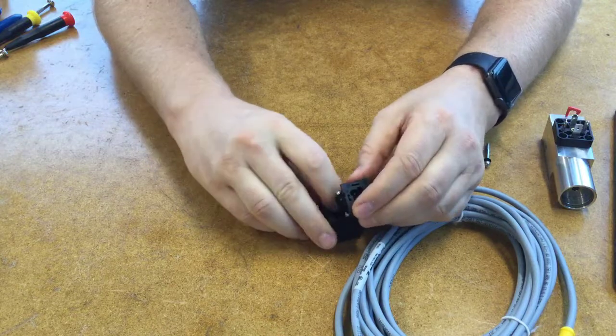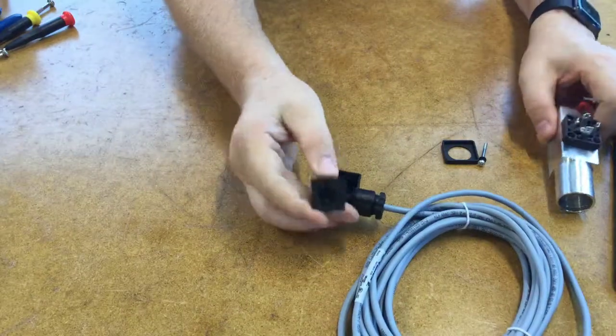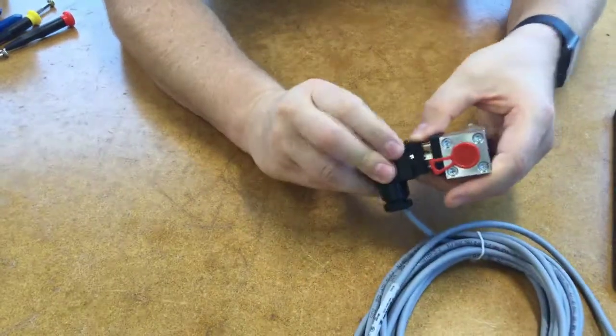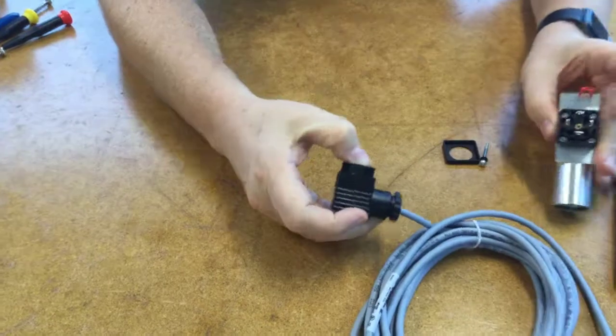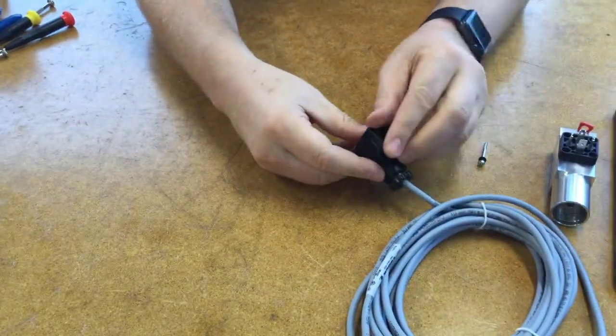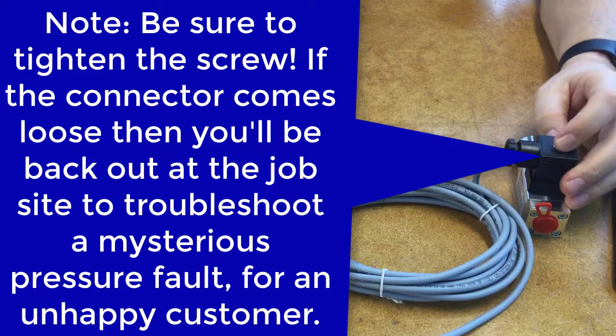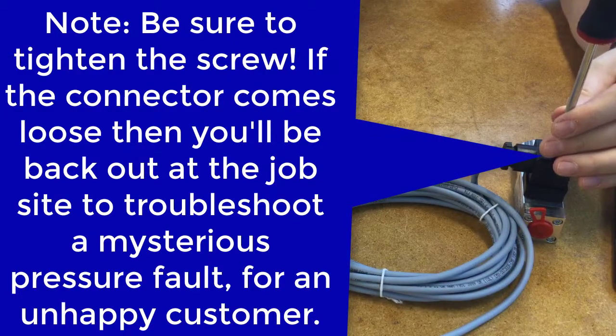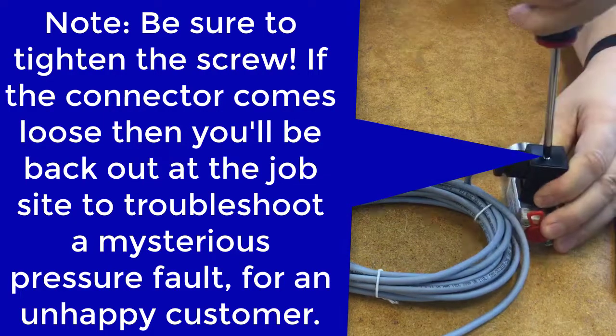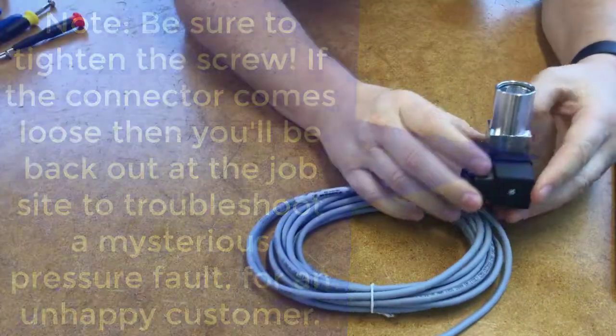One thing you want to pay attention to when you're putting these back in is the orientation of that ground, because you can turn this any way you want to, so when you are done your wire can point any direction. So in this case I want my wire or cable to go to the side, so I'm just going to say that the side is the right way. Make sure the gasket goes back on, slide that down, put it into the screw, and this is another one where a precision screwdriver isn't probably big enough but we just want to tighten that up.